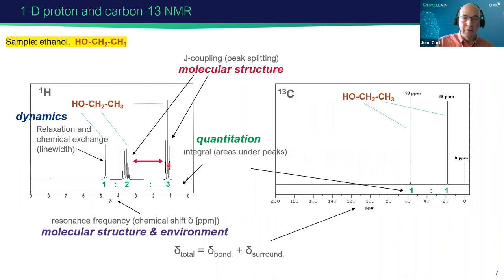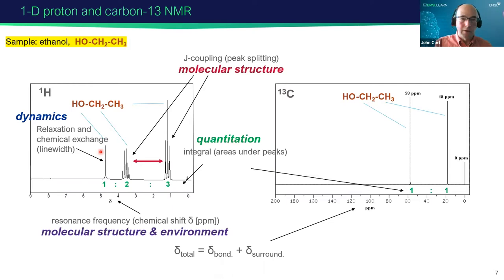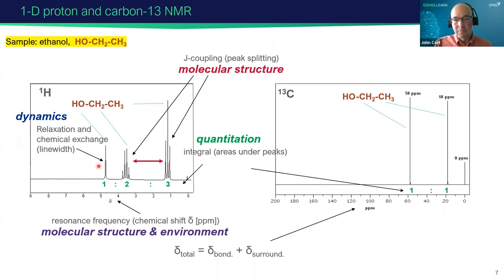We also get quantitative information — with NMR, we essentially count the spins, and that's really useful for metabolomics, as we'll hear later. We also get information about dynamics — there are many different ways we can understand molecular dynamics by looking at different relaxation processes with NMR. We can also find information about chemical exchange, exemplified by the line width of the hydroxyl proton.